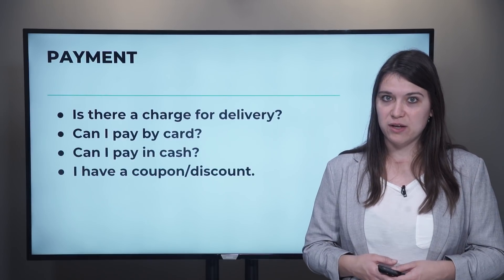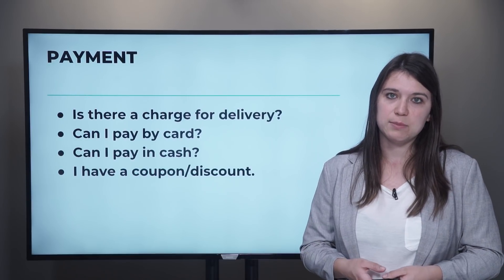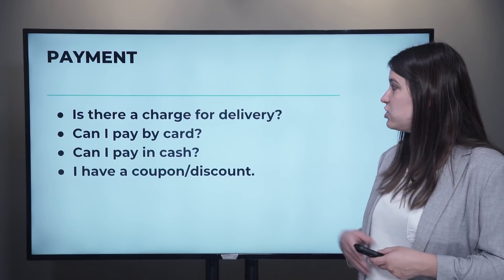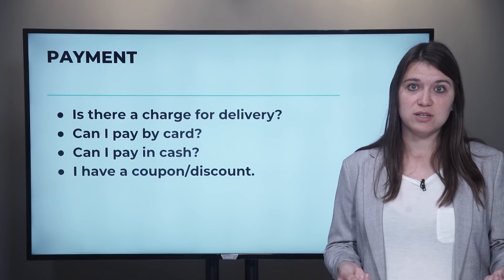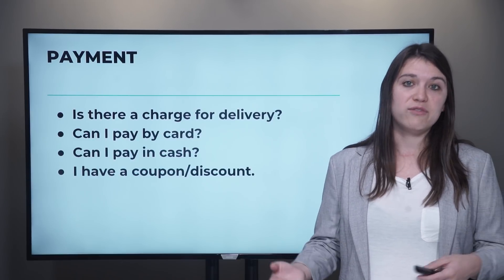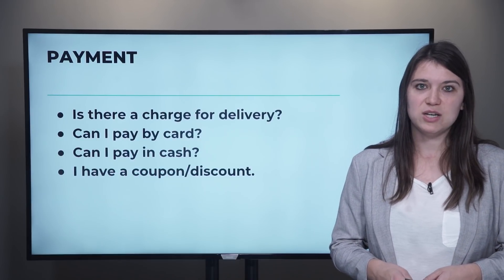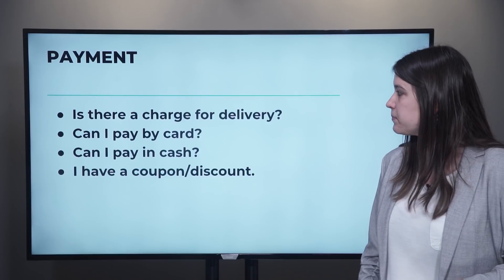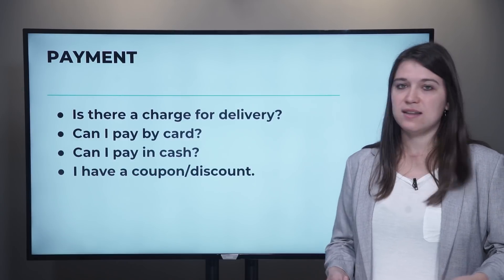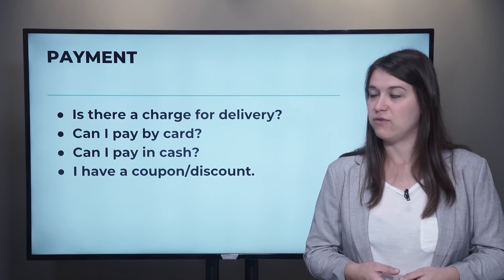How are you going to pay for your meal? If you order online, normally you will pay with your credit card, or sometimes you can choose the option of paying in cash upon delivery — when they actually bring you your food, you pay in cash. You can ask first, 'Is there a charge for delivery?' Sometimes there's a minimum amount that you have to order for them to deliver it, or they'll charge you a delivery fee — this could be two or three euros or dollars, depending on where you live and how far you live from the restaurant. You can say, 'Can I pay by card?' or 'Can I pay by cash?' And let them know if you have a coupon or a discount that you can apply to the price of your meal.